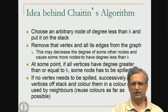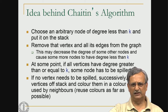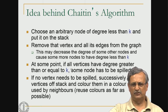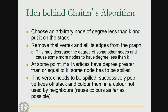We continue until either the graph becomes empty — meaning it can be colored with k registers — or all remaining vertices have degree greater than or equal to k. In the latter case, we resort to spilling: the live range corresponding to that node will not be assigned a register but will reside in a memory location. We remove the spilled node from the graph and continue.